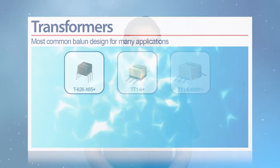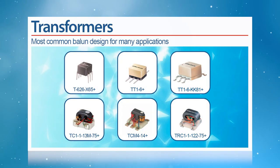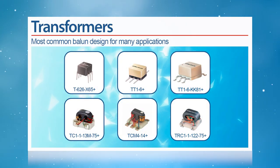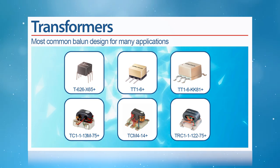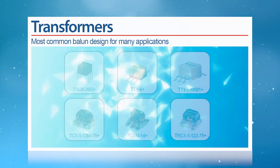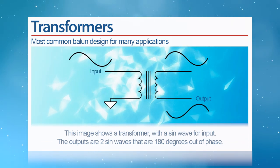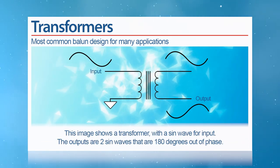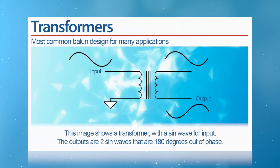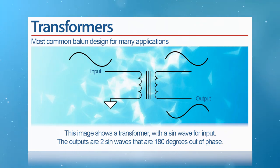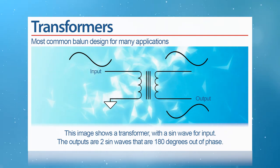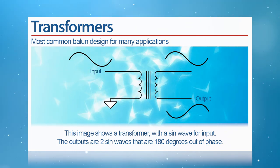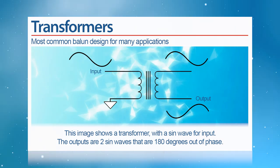Of the numerous ways to design a balun, transformers are by far the most common. Transformers allow a signal to split between two paths with equal magnitude and 180 degree phase offset. This is perfect for applications involving differential signaling.